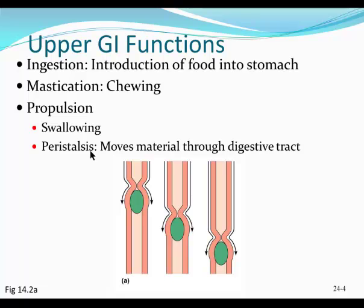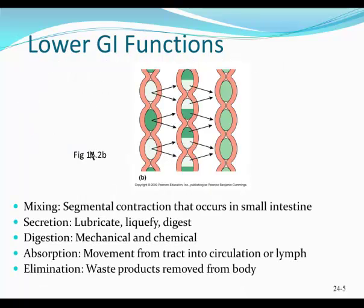Peristalsis consists of waves of contraction and relaxation that propel food forward through the digestive tract. In the lower digestive tract, we see more breakdown of food, which we call mixing — contractions within the small intestine causing food to move back and forth. We also see this in the stomach, where food is moved back and forth through muscular contractions to increase surface area for enzymes and hydrochloric acid to act on the food and break it down into smaller parts.